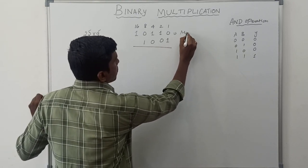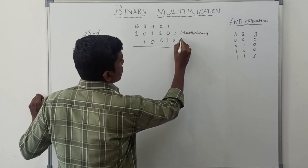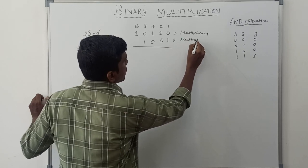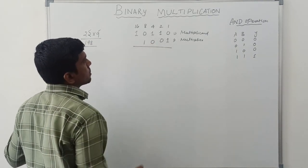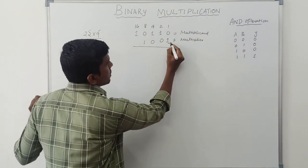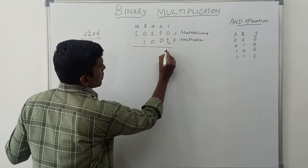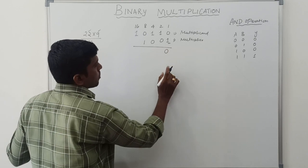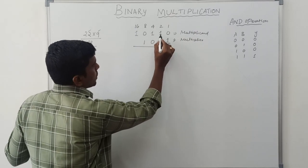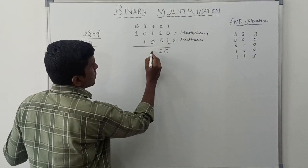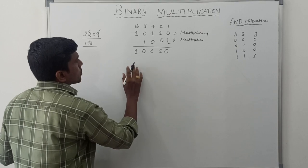This first term represents the multiplicand, and this second term represents the multiplier. The multiplier term is multiplied with the multiplicand. The first bit of the multiplier is 1, so this 1 is multiplied with all the multiplicand bits using the AND property: 1·0=0, 1·1=1, 1·1=1, 1·0=0, 1·1=1. Both inputs must be high to get result 1. So the first partial product term is done.